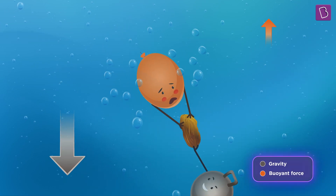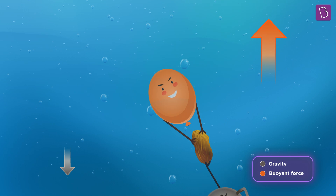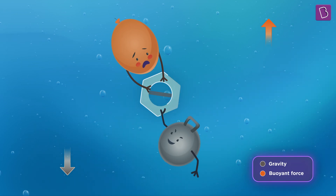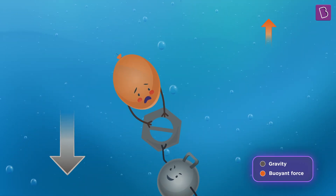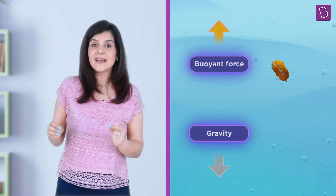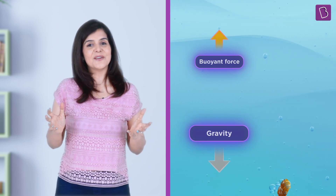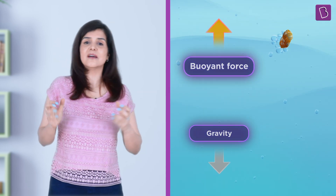When gravity wins, the raisin sinks. On the other hand, when the buoyant force wins, the raisin rises upwards. We already know that more the weight of an object, more is the force of gravity. So heavier an object is, more would be the downward force. But the raisin is not gaining or losing any weight during its dance — the weight remains the same. So the pull of gravity remains identical throughout the dance of the raisins. This means that when the raisin falls, the buoyant force must be weaker than gravity. Similarly, when the raisin rises, the buoyant force must be stronger than gravity.